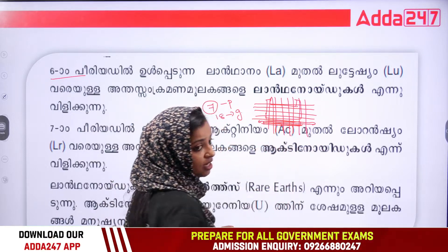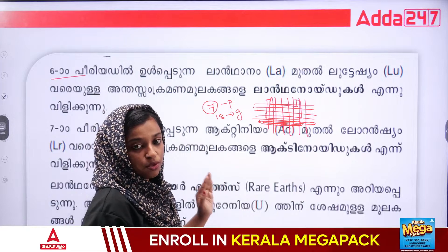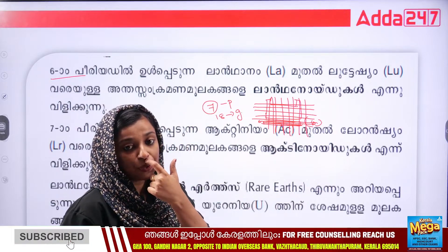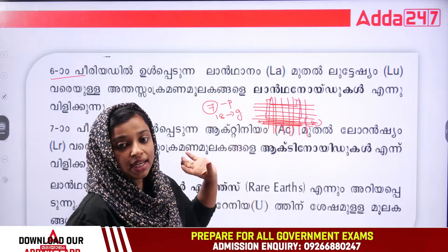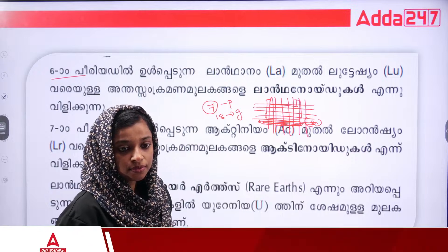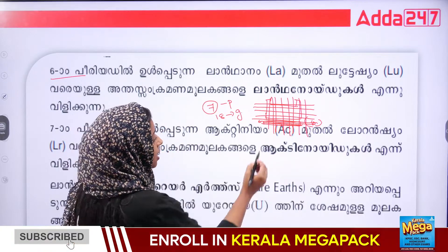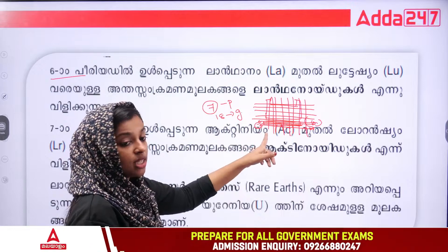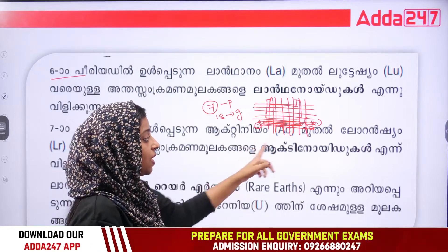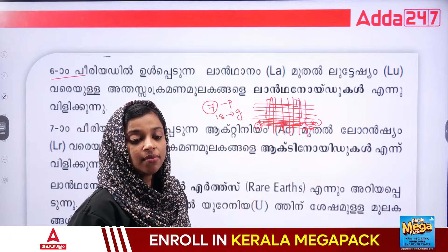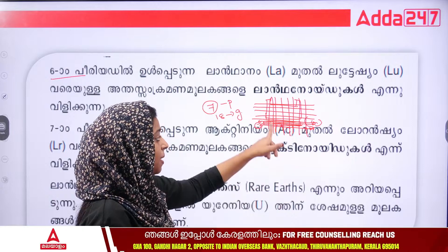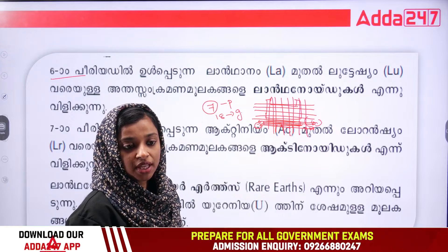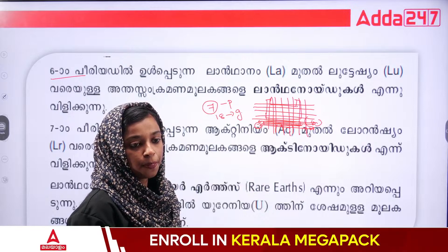This is the same period — 6th period. It's time to find. This is the lanthanoids. If we have to write the entire earth, what is the entire earth? Okay, it is the entire earth and then we have to write the entire earth.